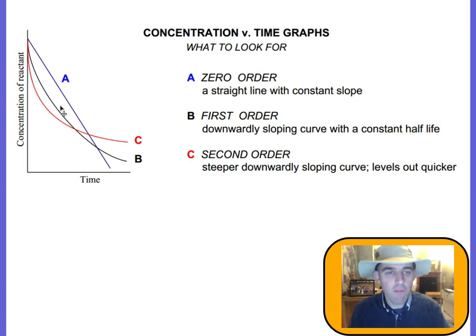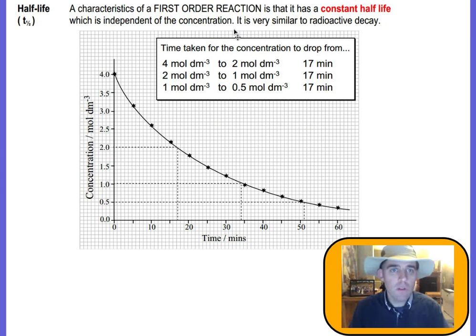So if we look at the half-life of these, we can tell which one is A, B, and C. For any first-order reaction, the half-life is constant, independent of the concentration. Let's look at this.